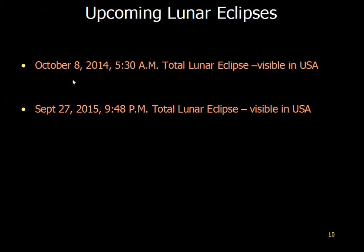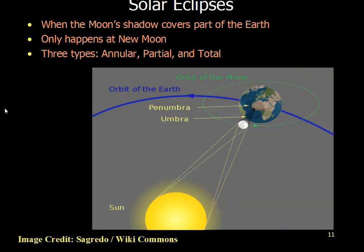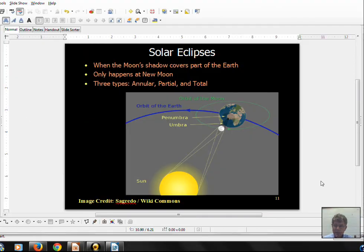Some upcoming eclipses: if you're an early riser, October 8, 2014 at 5:30 a.m. Central Time. If you'd like to be an evening observer, about a year from now — this is recorded in 2014 — September 27, 2015 will be a good one to view. Solar eclipses will be covered in the next video. Keep watching the sky.